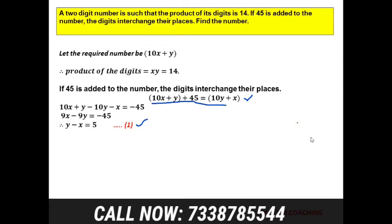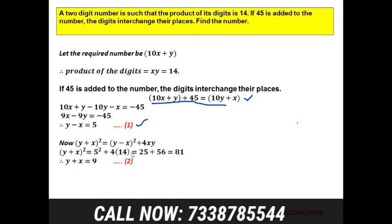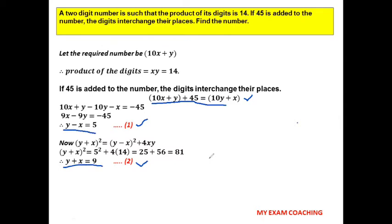We need one more equation. Using the identity (a + b)² = (a − b)² + 4ab, we write (y + x)² = (y − x)² + 4xy. We know y − x = 5 and xy = 14, so (y + x)² = 25 + 56 = 81, giving y + x = 9. This is our second equation.